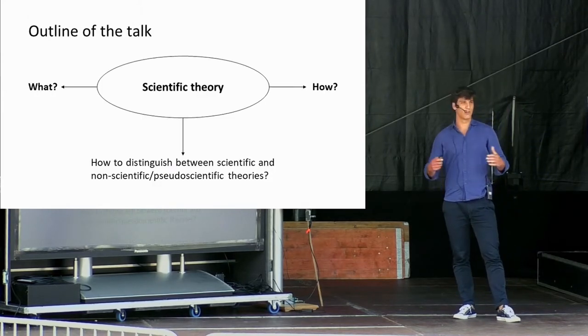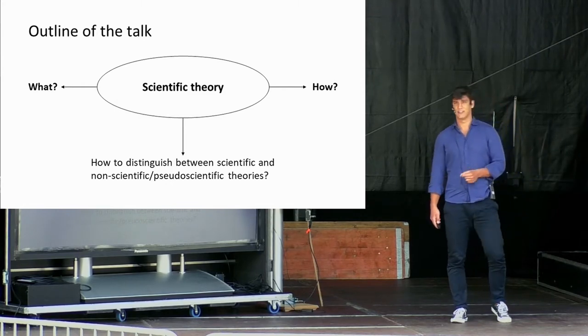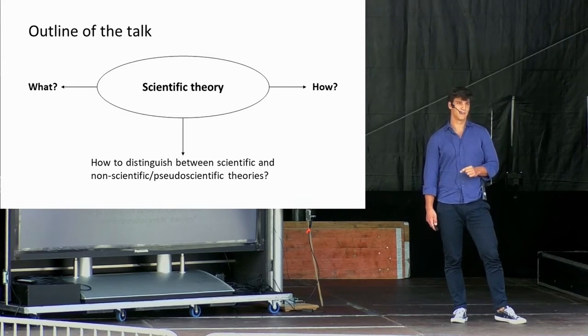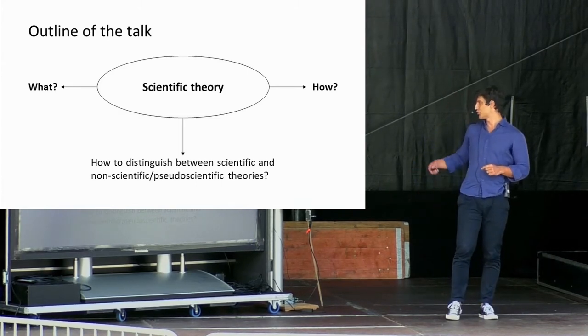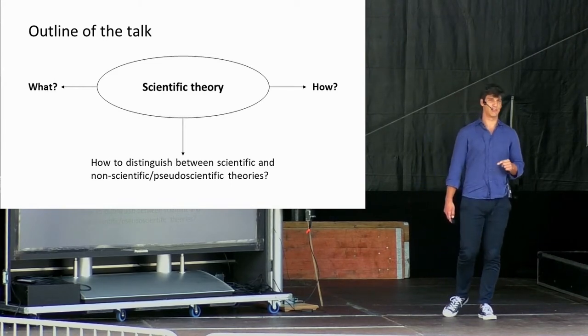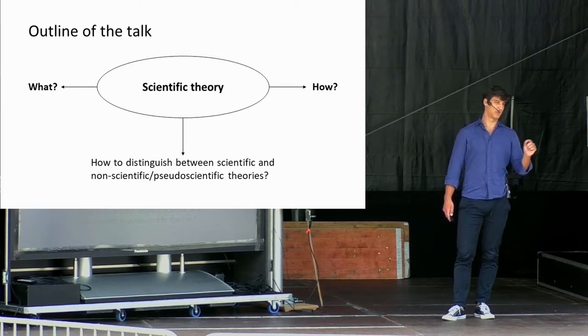We are witnesses of a constant degradation of the scientific endeavor. In order to fight this trend, it is necessary to understand what science is and why we should believe in science. In order to do so, today I would like to show you what a scientific theory is, how scientists get to a scientific theory, and how it is possible to distinguish between scientific and non-scientific theories.